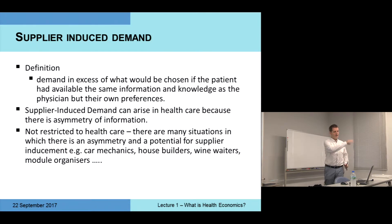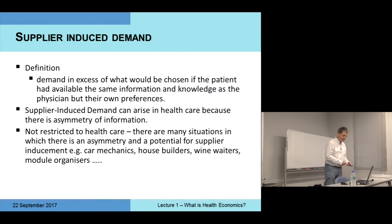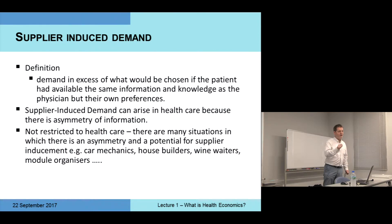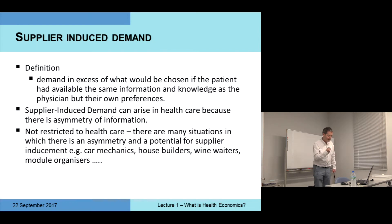All of these situations have the same characteristic — doctor/patient, car mechanic/motorist, house builder/resident, wine waiter/customer, module organizer/student. They're all characterized by asymmetry of information. And so they all have a potential for supplier inducement — for a decision being made that's different from the one that the principal would have chosen if they had the same information.